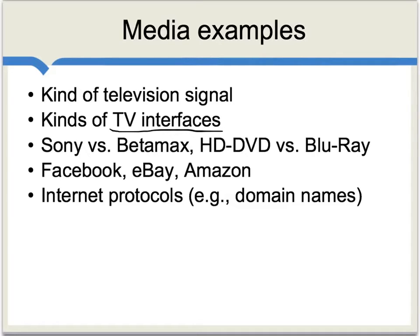A lot of web companies rely directly or indirectly on network externalities. For instance, Facebook is useful precisely because so many other people are on the system. eBay is useful as a general medium for buying and selling goods, and Amazon is useful in part because that's the place where a lot of other people leave their reader reviews. Finally, a lot of internet protocols rely on many people using similar systems or adopting similar practices.